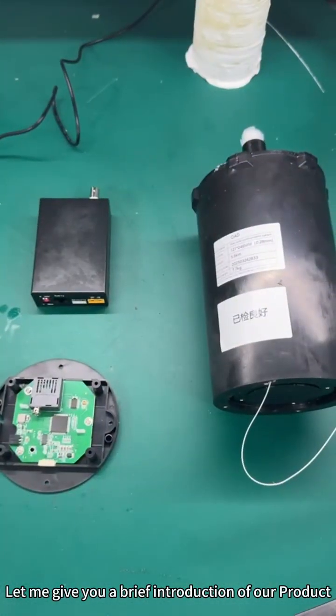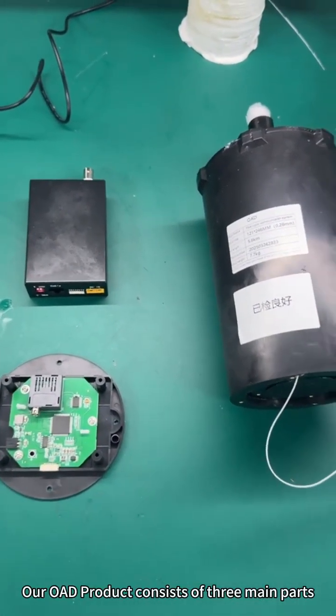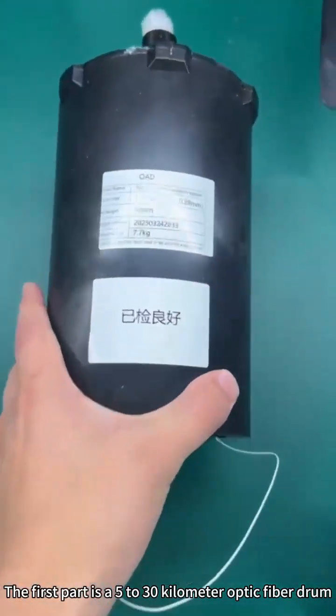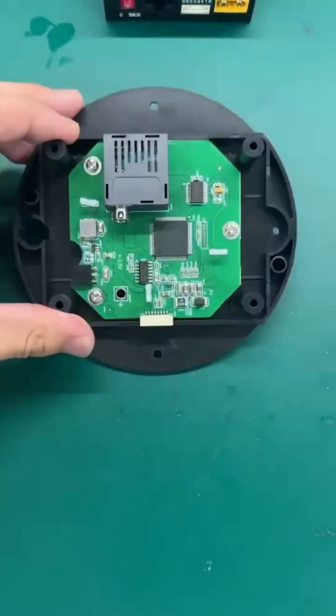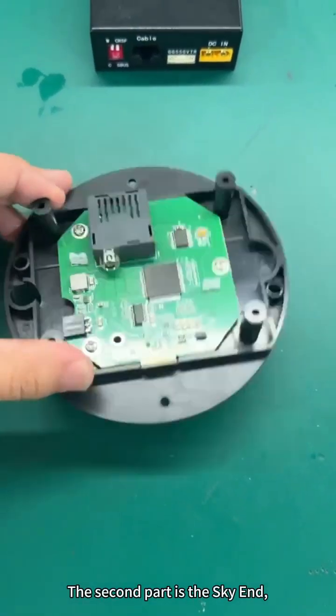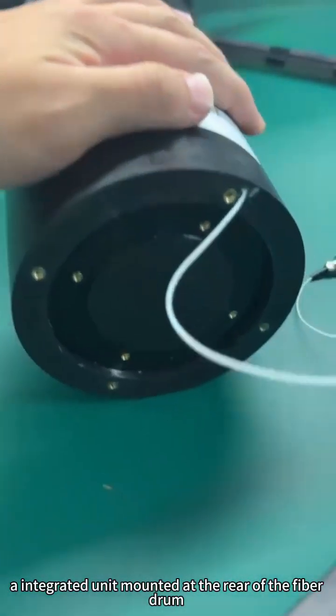Let me give you a brief introduction of our products. Our OAD product consists of three main parts. The first part is a 5 to 30 kilometer optic fiber drum. The second part is the sky end, an integrated unit mounted at the rear of the fiber drum.